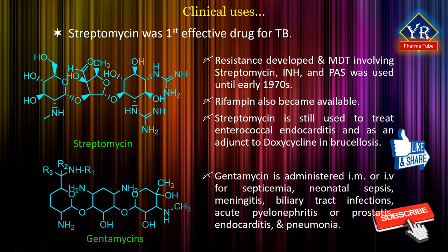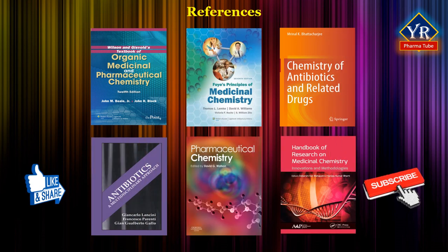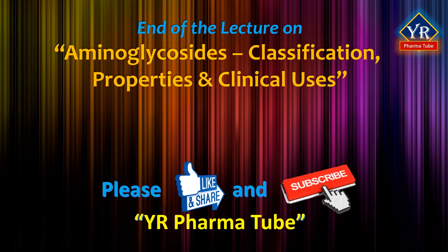Gentamicin is administered by intramuscular or slow intravenous injection for the treatment of a number of infections including septicemia, neonatal sepsis, central nervous system infections including meningitis, biliary tract infections, acute pyelonephritis or prostatitis, endocarditis, and pneumonia in hospital patients. It can be used topically in drops for the treatment of eye and ear infections. That covers the classification, properties and clinical uses of aminoglycosides.